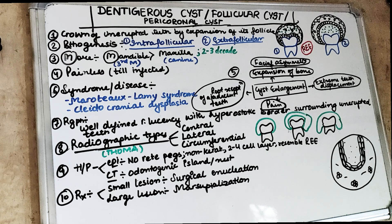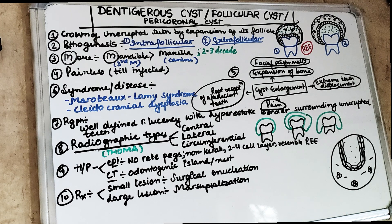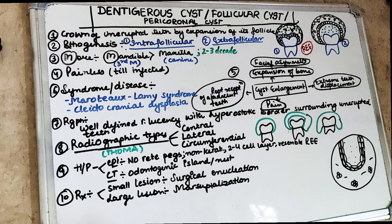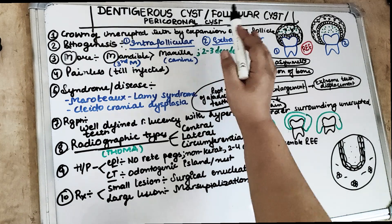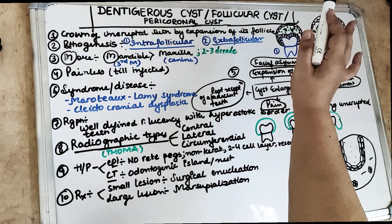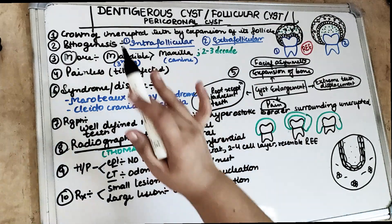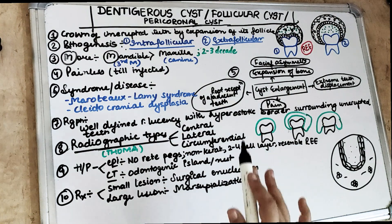Hello friends, welcome back to our 10 in 10 series where we cover each topic under 10 headings in 10 minutes. Today's topic is the Dentigerous cyst. Before we get started, make sure you subscribe to our channel and click on the bell icon so that you don't miss any of our future videos. So talking about the Dentigerous cyst, also known as the Follicular cyst or the Pericoronal cyst.